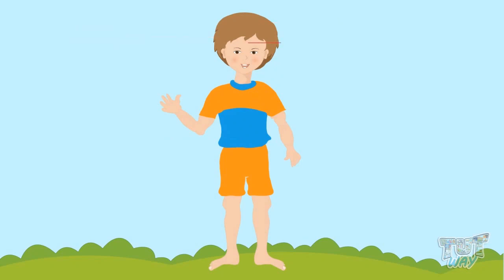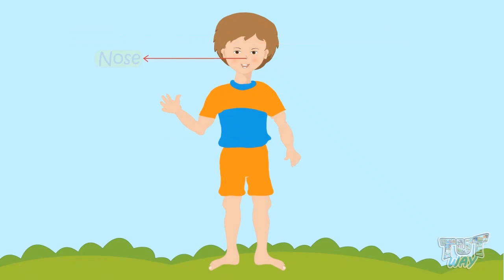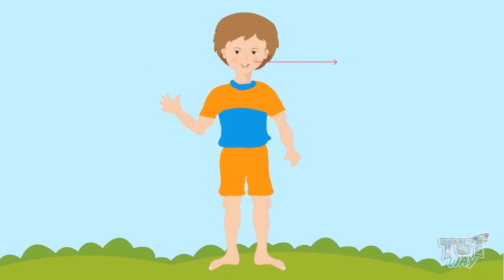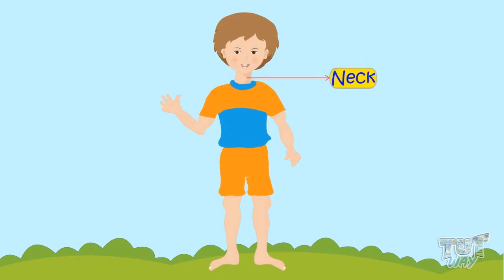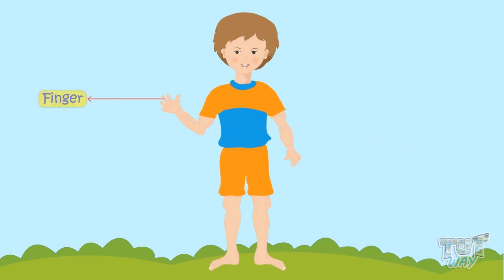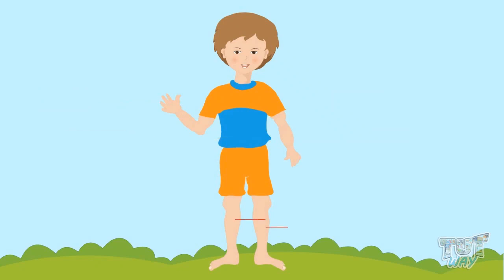This is forehead, this is nose, this is chin, cheeks, eyes, lips, neck. Let's fill the blanks for some more parts: arms, hand, fingers. Let's fill the blanks for some more parts: chest, stomach, legs, foot, toes.